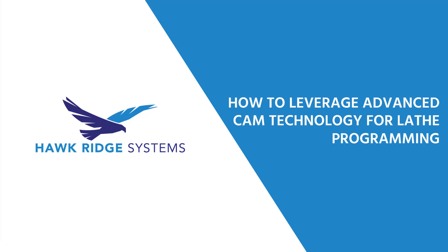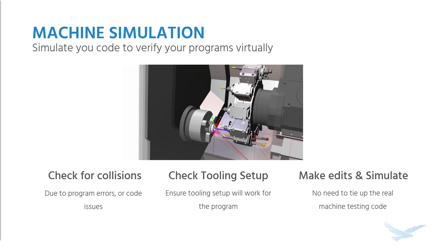One of the things you can do inside of CAMworks is a machine simulation. What the machine simulation lets you do is check for collisions with your part and with your machine. You can check to see if your tool setup is going to cause any collisions, if your tool setup has enough reach to achieve the toolpaths you've programmed, and if there is any need for edits, you can do edits on the fly and go back and test those edits to see if that corrects the issue.